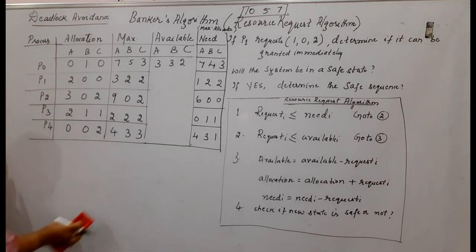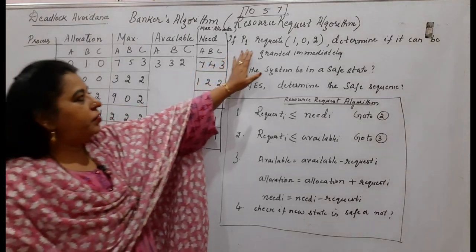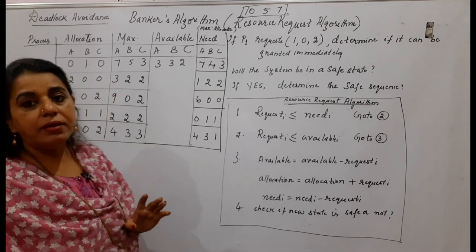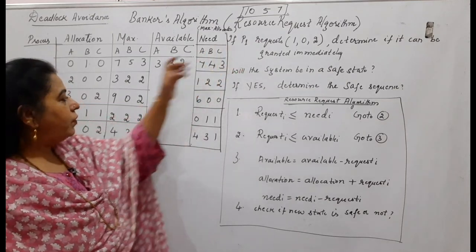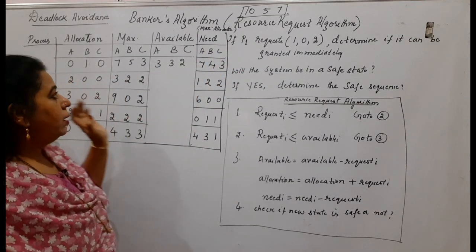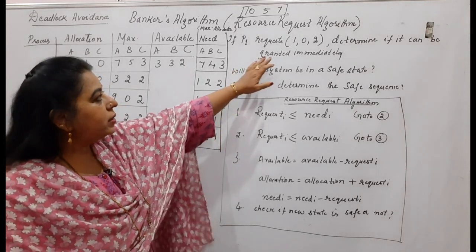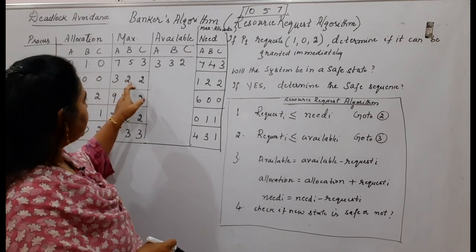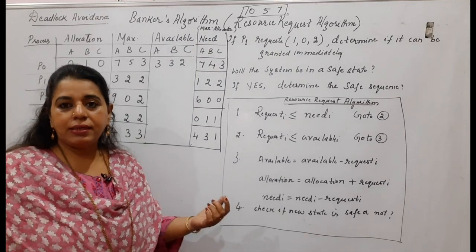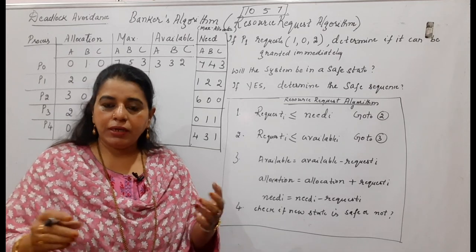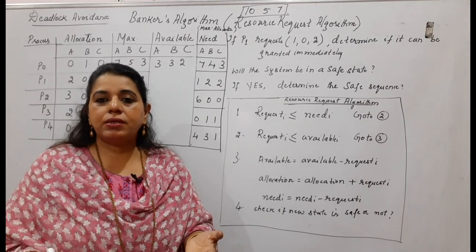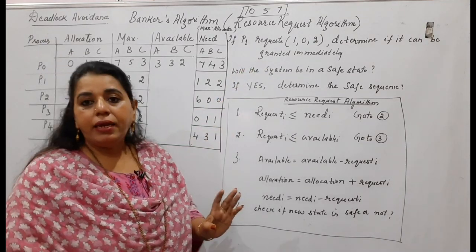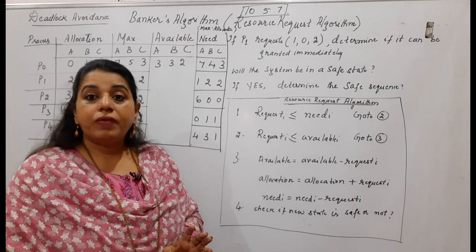Now we apply the resource request algorithm. The statement says: if P1 requests 1,0,2, determine if it can be granted immediately. P1 is already holding 2,0,0 and its maximum is 3,2,2. Now P1 feels it requires 1,0,2 more in order to start its task — it is making a request mid-execution. The system must check whether granting this request will keep the system in a safe state.